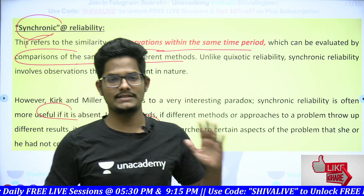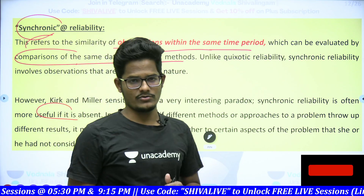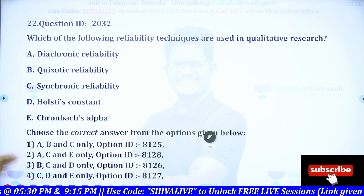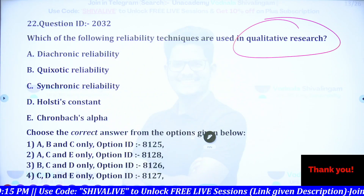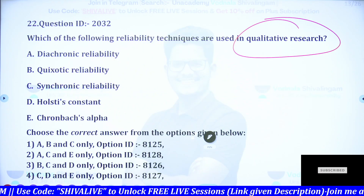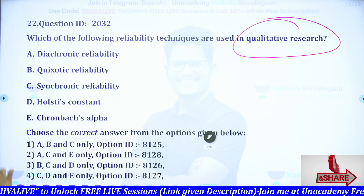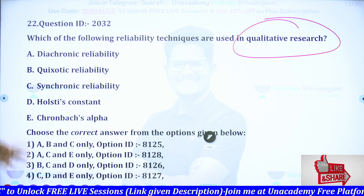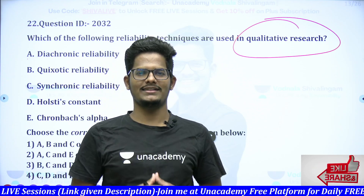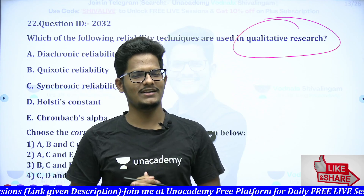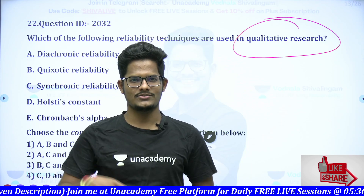I hope I am clear with this concept of three types of reliability given by Kirk and Miller. This is a previous year question: 'Which of the following reliability techniques are used in qualitative research?' The options include diachronic, quixotic, synchronic, and Horsley Constraint and Cronbach's Alpha. Answer in the comment box — I will be telling the answer there. Please do hit the like button, subscribe, press the bell icon, and share with your friends. We will meet in the next video.